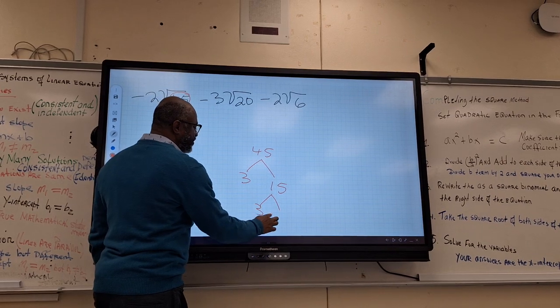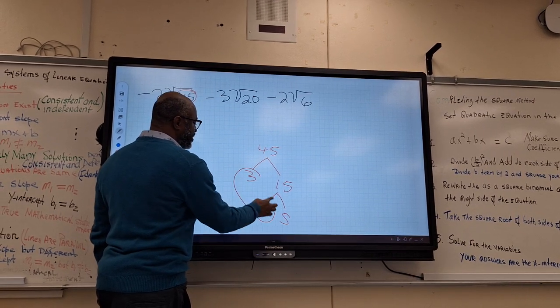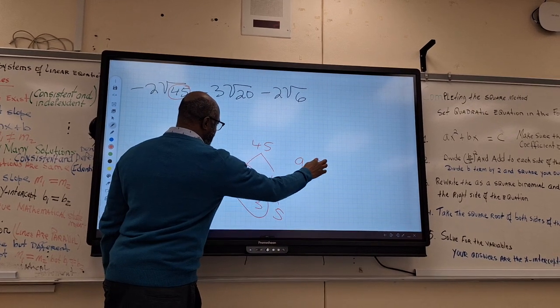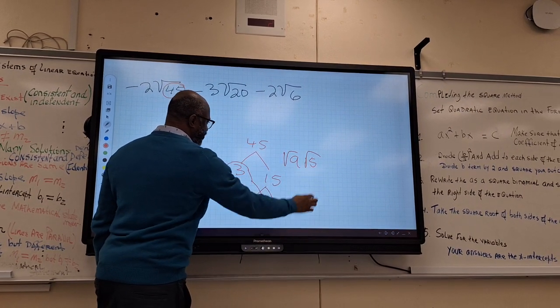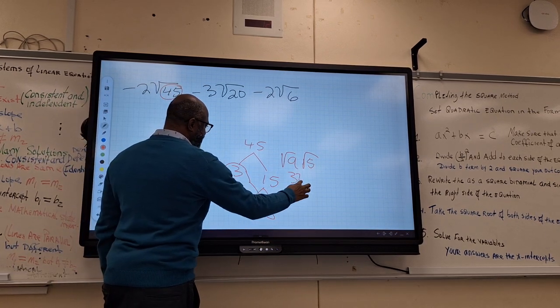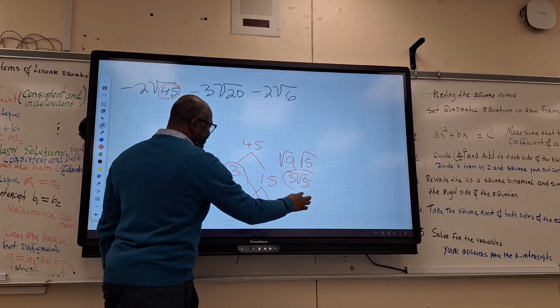3 times 5. This becomes 9 times what? 9 times 5. Then you take the square root of that. What will that be? 3 root 5. You got to pay attention. That's what you love to do. That's what 45 is.